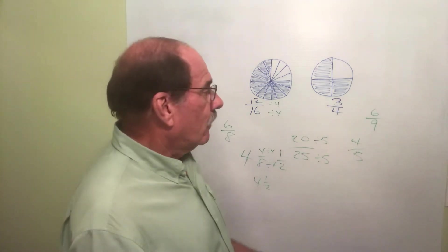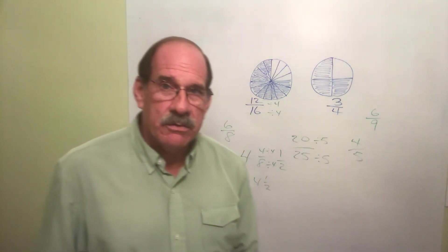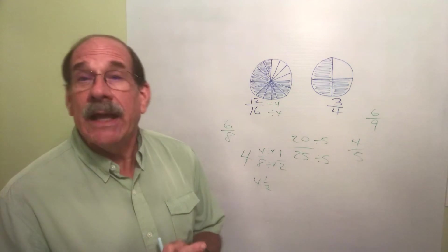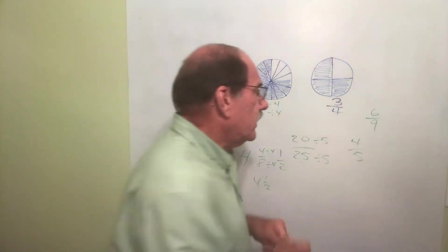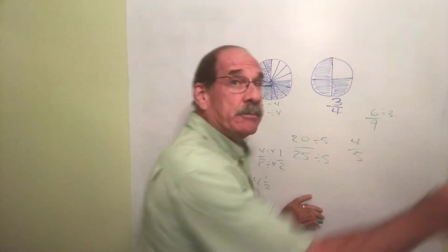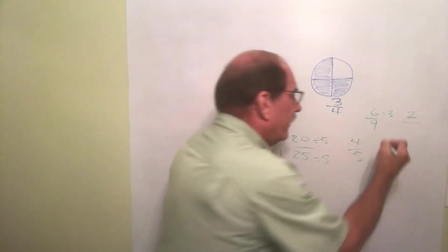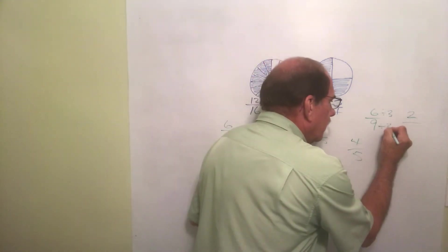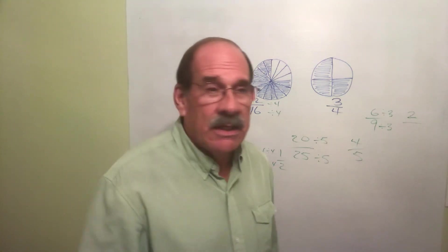Well let's reduce to lowest terms. What can you divide both of those by? Let's see, how about 3? Divide the top number by 3: 6 divided by 3 is 2. 9 divided by 3 is 3. Oh, 2/3rds - that's the same thing, reduced to lowest terms.